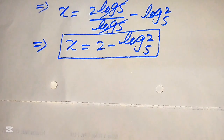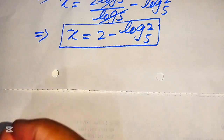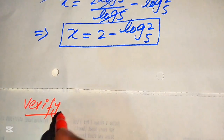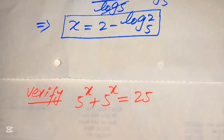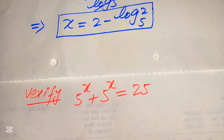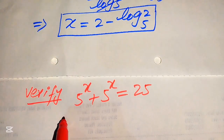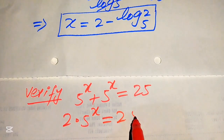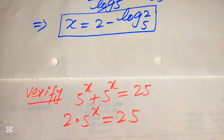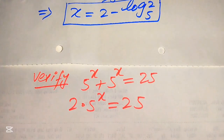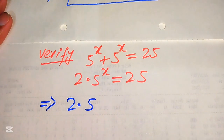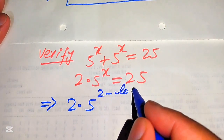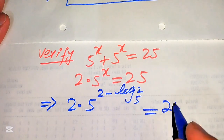For verification, we first write the given question statement: 5 to the power of x plus 5 to the power of x is equals to 25. We simplify the left hand side to its lowest form, which gives 2 times 5 to the power of x equals 25. Now we substitute the value of x, so the left hand side becomes 2 times 5 to the power of (2 minus log of 2 with base 5), and we check if this equals 25.